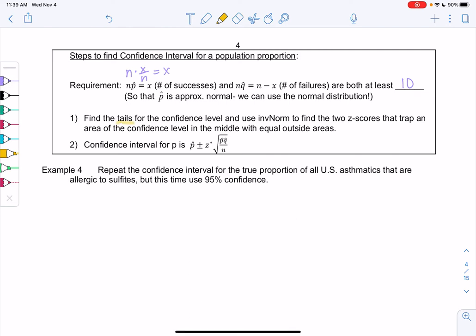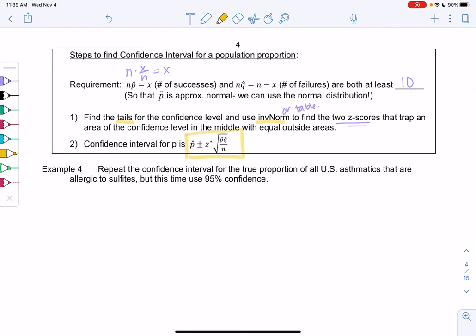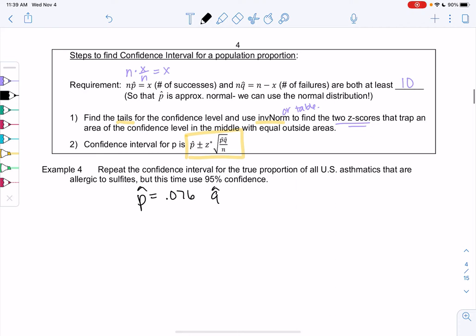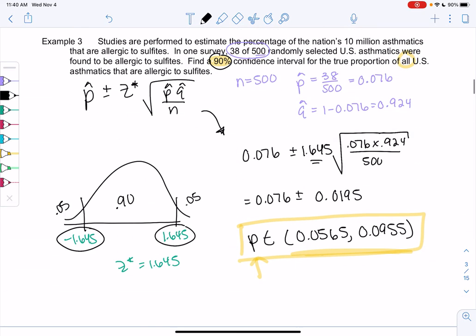So just a reminder of the steps. We find the tails for the confidence level, and then we use inverse norm or the table to find the z scores that trap that area in the middle. And then we can just plug into the formula p hat plus or minus z star times square root of p hat times q hat over n. So this is my general formula. So let's try this one more time for the asthmatics allergic to sulfites, but let's change it to 95%. So p hat was 0.076, q hat was 0.924, and then n was 500. Just copying those numbers. The sample hasn't changed from last time. What's changed is the percent in the middle.